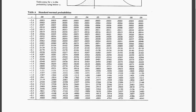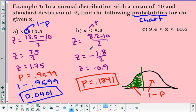Remember when you're looking at this table: the z-scores are on the outside and the probabilities are on the inside. If you're asked to find the probability, you first need the z-score so you can look it up, and then use that z-score on the outside to get to the probability on the inside. These are two-step processes.